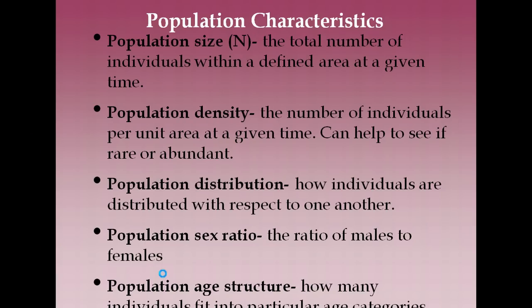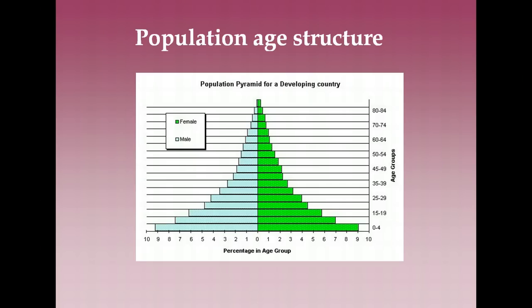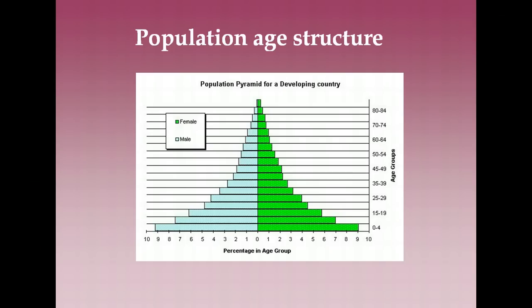The sex ratio is simply the ratio of males to females. Since the number of offspring produced is really dependent on how many females are in the population, knowing this ratio helps scientists estimate how many offspring a population will produce in the next generation. Lastly, you have population age structure — how many individuals fit into particular age categories. This is a population pyramid for a developing country, and we'll get into this much more in human population studies.